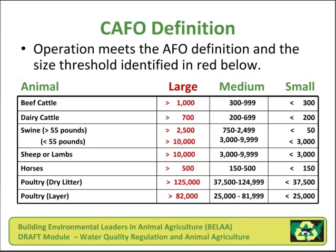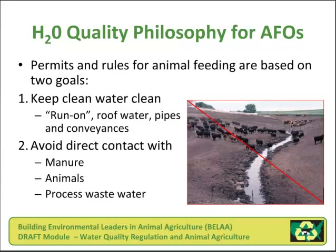In managing water quality for animal feeding operations, there are two major philosophies that permits and rules are based on. One: keep clean water clean — meaning keep as much clean water out of the production area as possible, by guttering roof water and putting up ditches and berms around the lot. The second philosophy is to avoid direct contact between surface waters and manure, animals, or processed wastewater. The image shows a cattle confinement area with a live creek running through the middle — this would be considered a violation in every state in the United States.